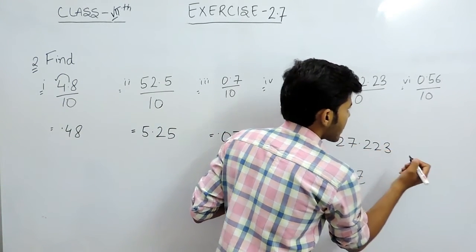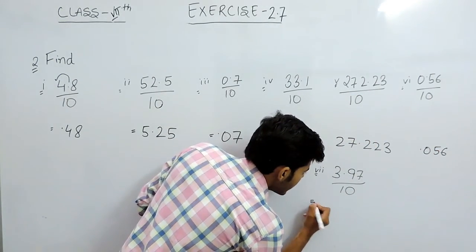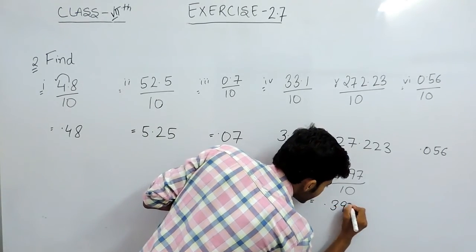Then 27.223, then 0.056, and in the last part it will be 0.397.